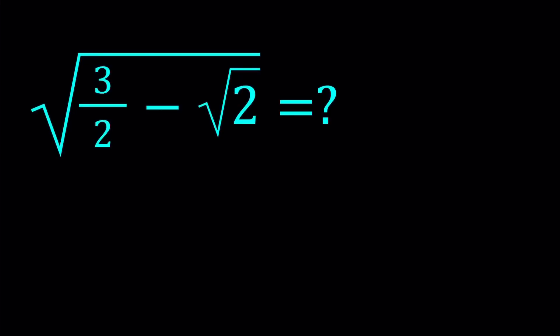Hello everyone. In this video, we're going to be simplifying a radical expression. We have the square root of 3 over 2 minus square root of 2, and we're going to write this in a simpler way. I'll be presenting three methods. Let's start with the first one.